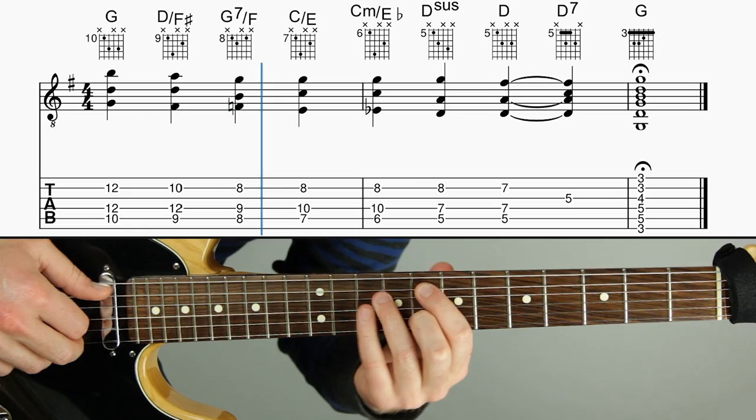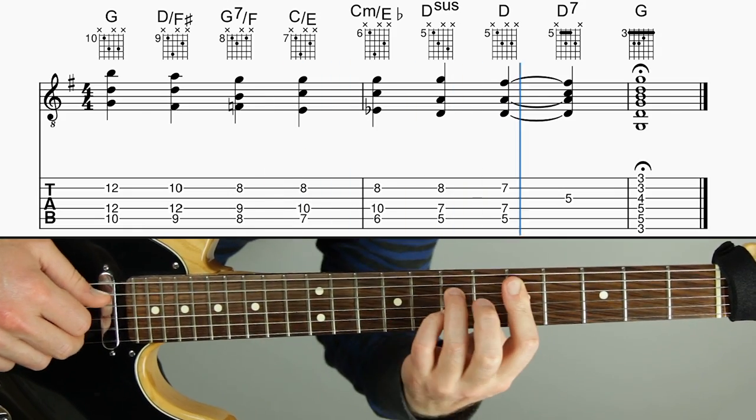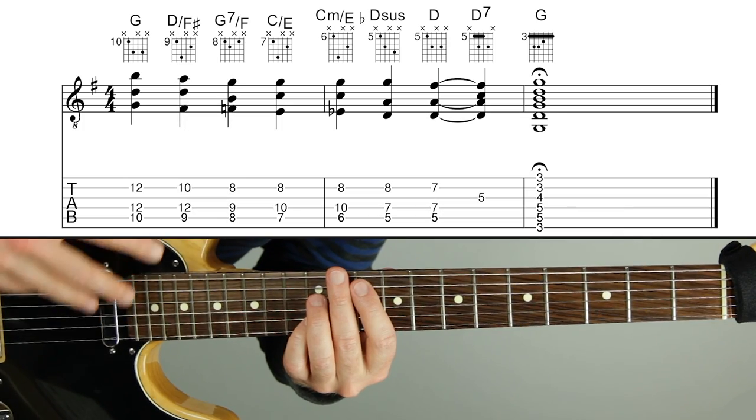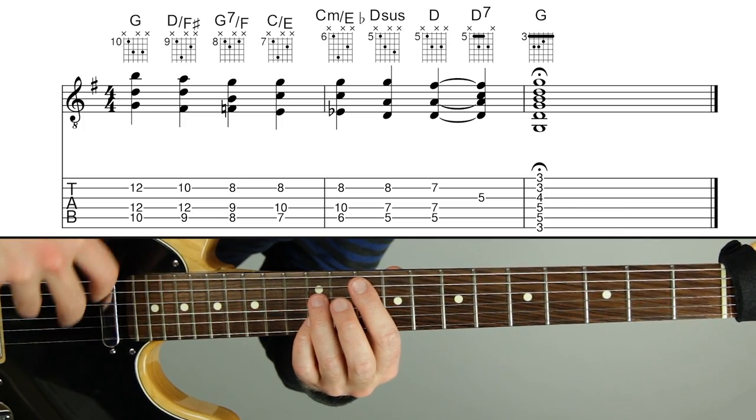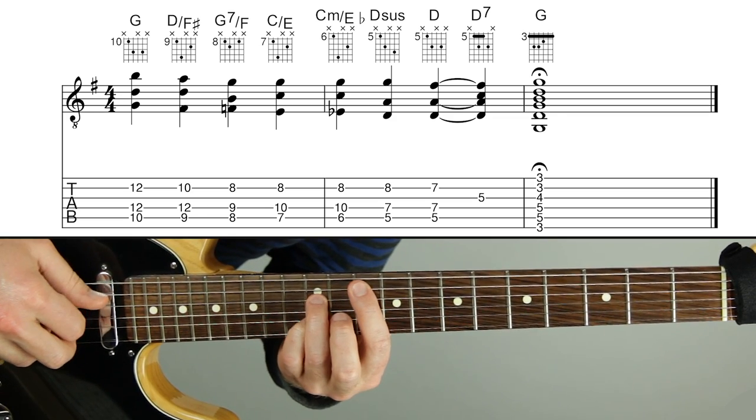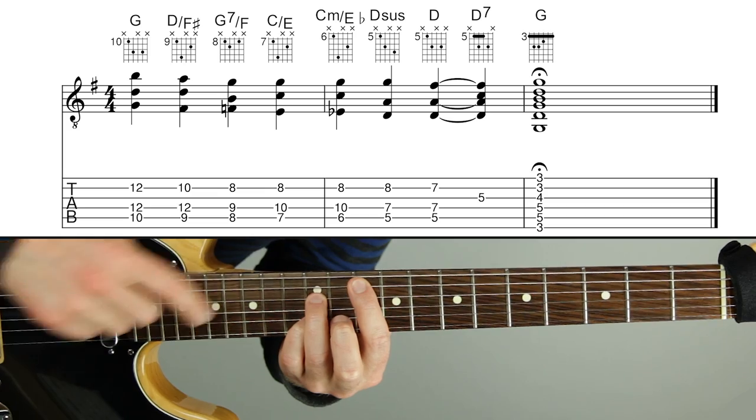Now here's the three part voice leading version of that exact same progression. I'll also play it in time. It's at 115 beats per minute. And then after that, I will break down what's happening. So here's what's happening and how I'm thinking of this voice leading progression, which in order to do voice leadings, we have to use inversions. And that's why I mentioned inversions at the beginning of the lesson.